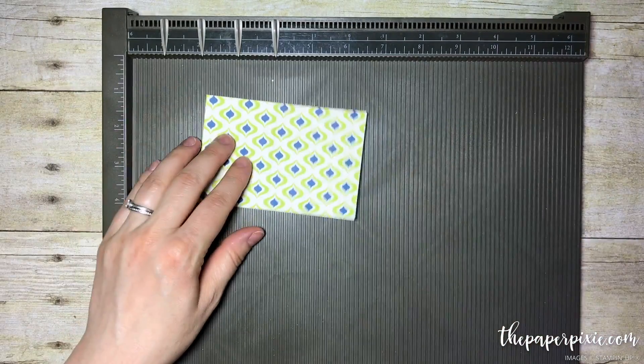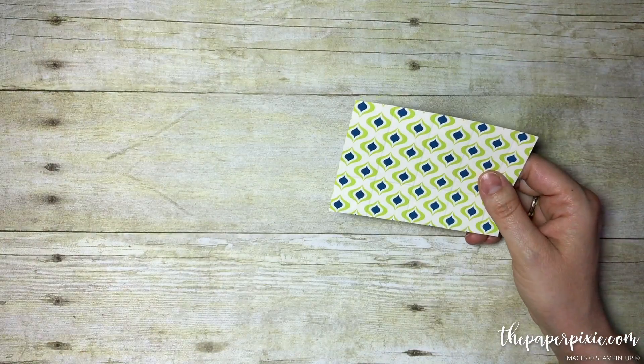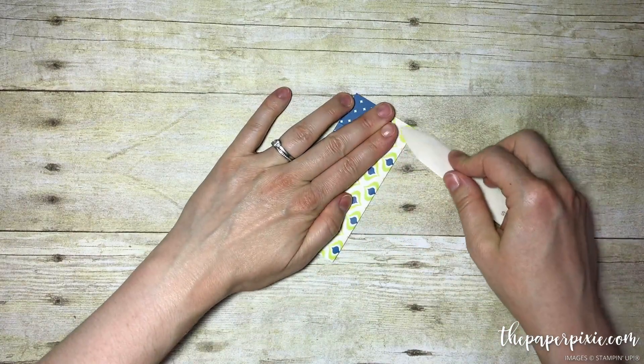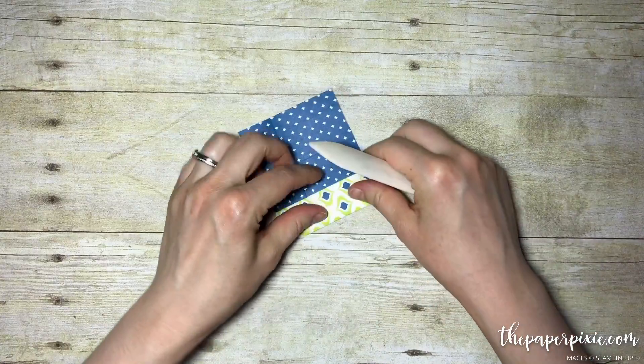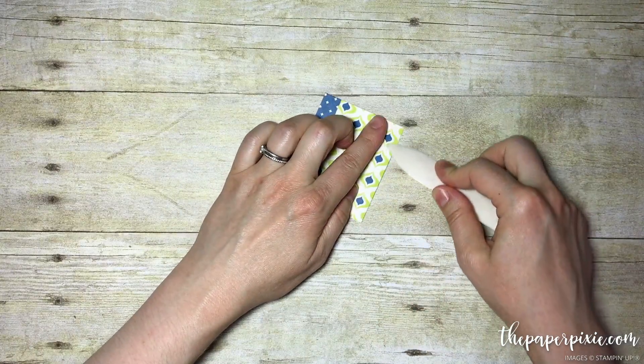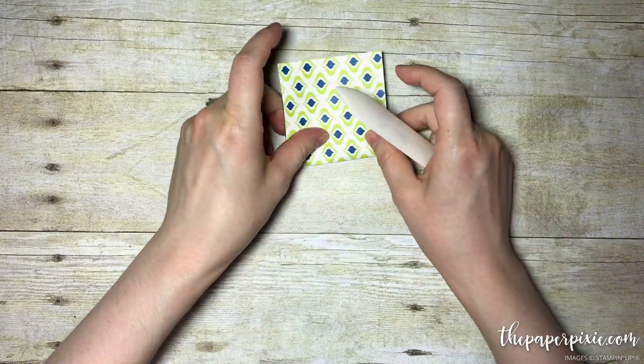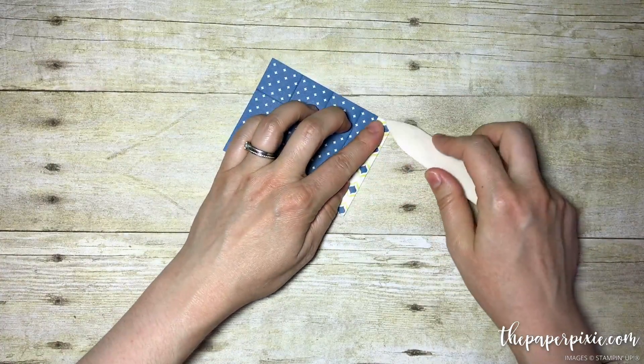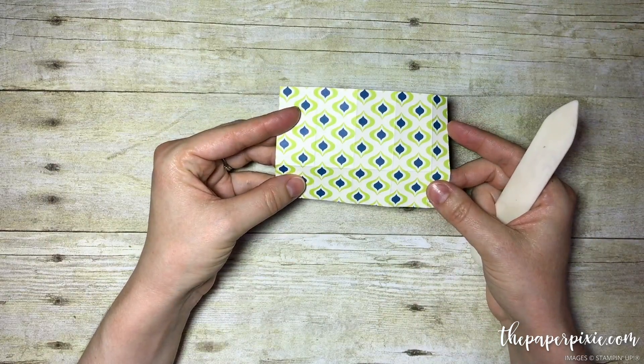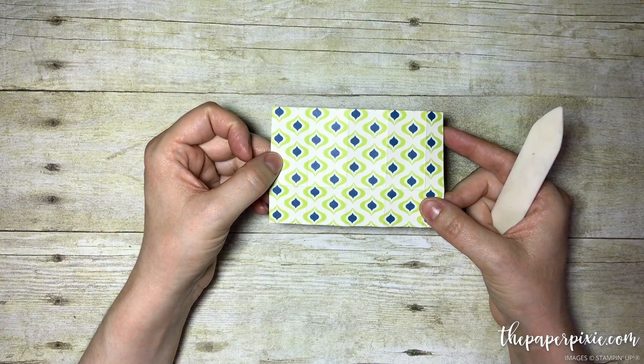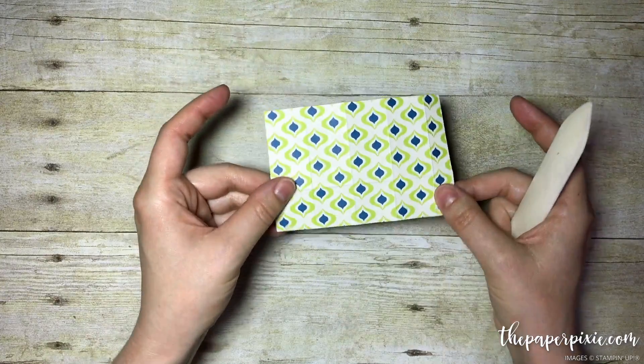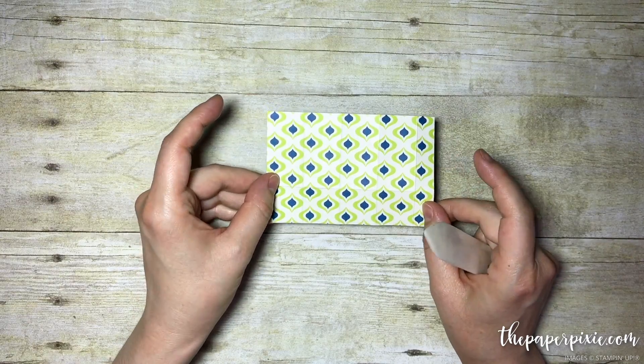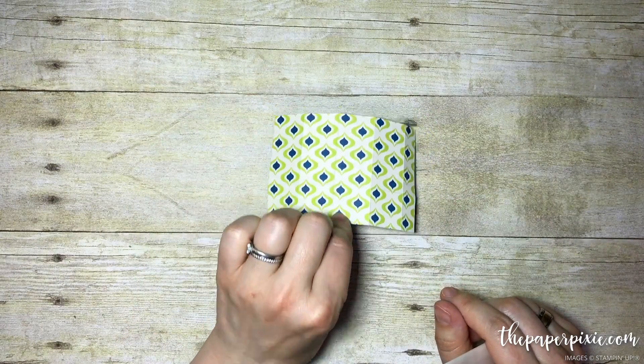I can put away my scoreboard and we're going to fold and burnish on all of our score lines. Because of its size, depending on if you're using directional paper, you can get 8 of these out of one piece of 12x12 paper. If it's not directional like this one, you can actually get 10 out of a 12x12 piece.